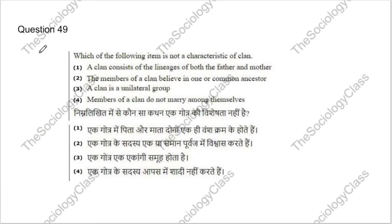Question 49: Which item is NOT a characteristic of clan? Options: a clan consists of lineage of both father and mother; members believe in one common ancestor; a clan is a unilateral group; members of a clan do not marry among themselves. The correct answer is A — clan does not consist of lineage of both father and mother. The remaining three options are correct characteristics.